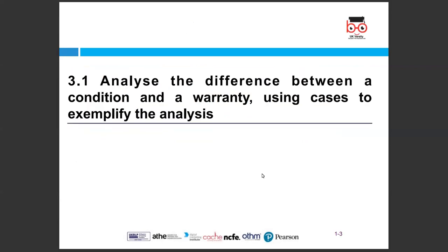So 3.1 — we will be looking at analysing the difference between a condition and a warranty, using cases to exemplify the analysis. Firstly, we need to look at what contract terms are. A contract term is any provision or term that forms part of a contract. Each of these terms provides a contractual obligation which can lead to litigation if breached. Every contract that a business or organisation enters into will have critical terms that fall into various categories and must be abided by.